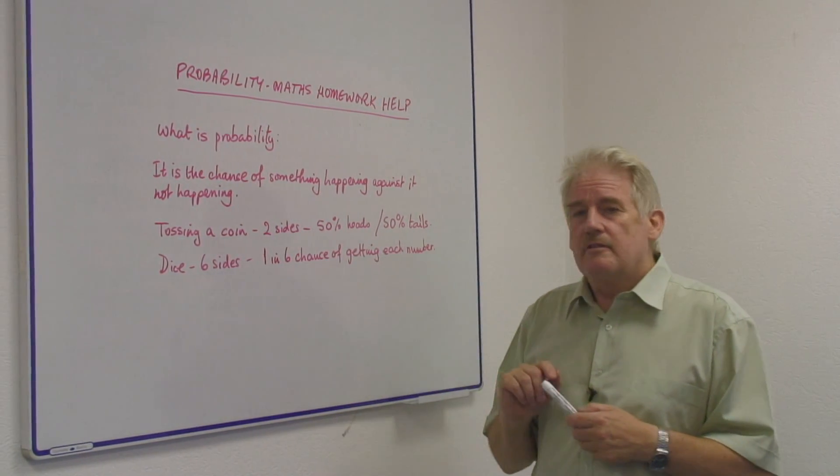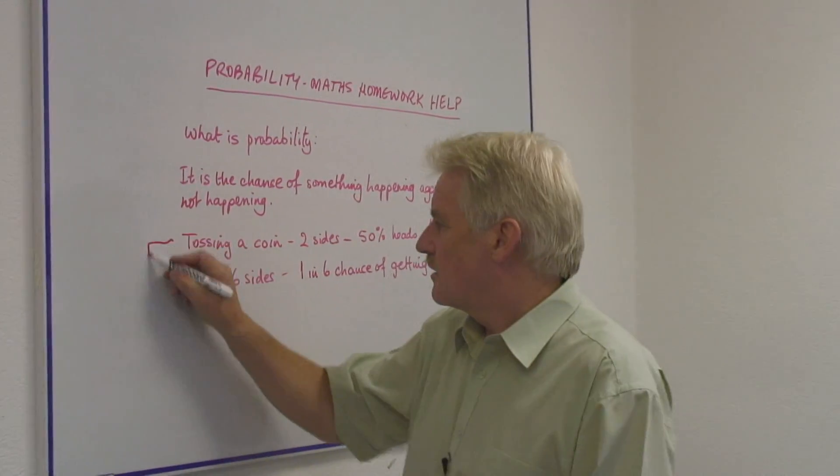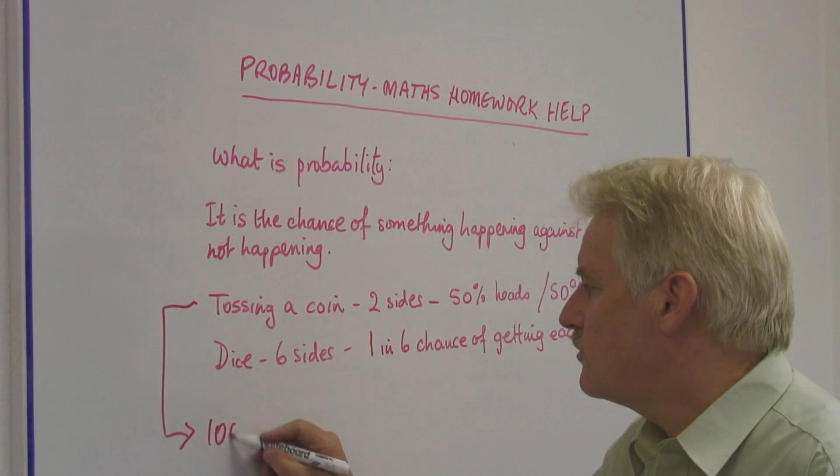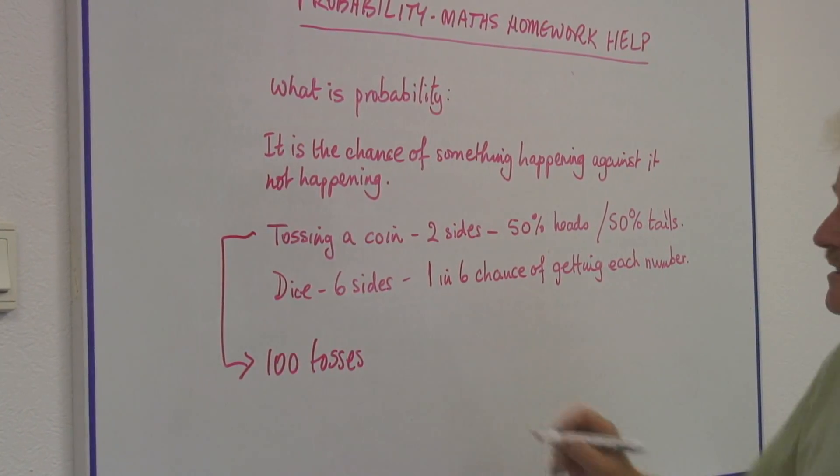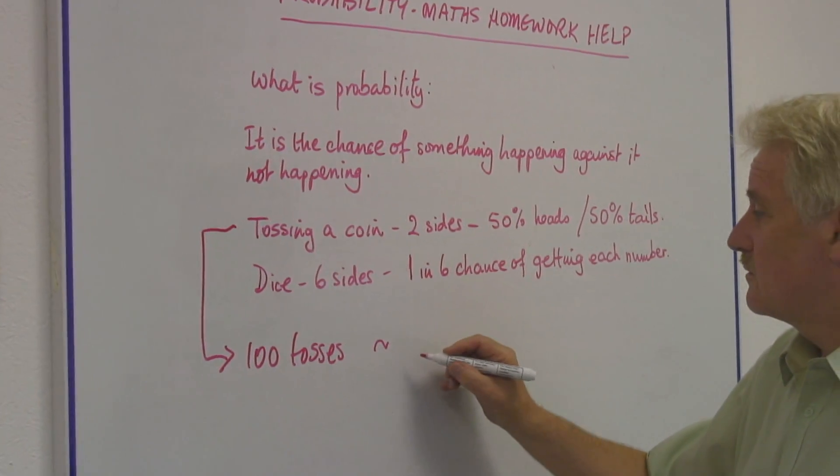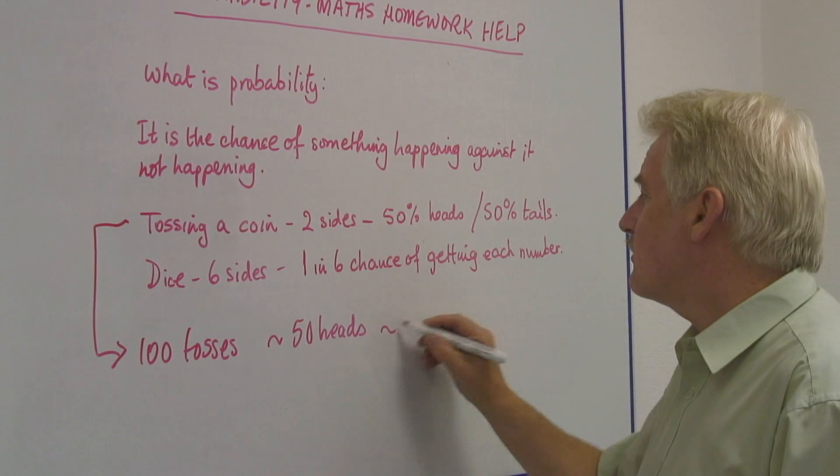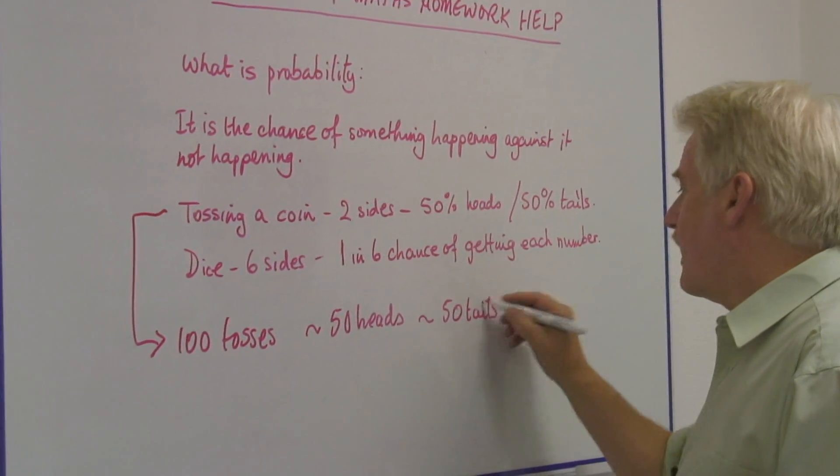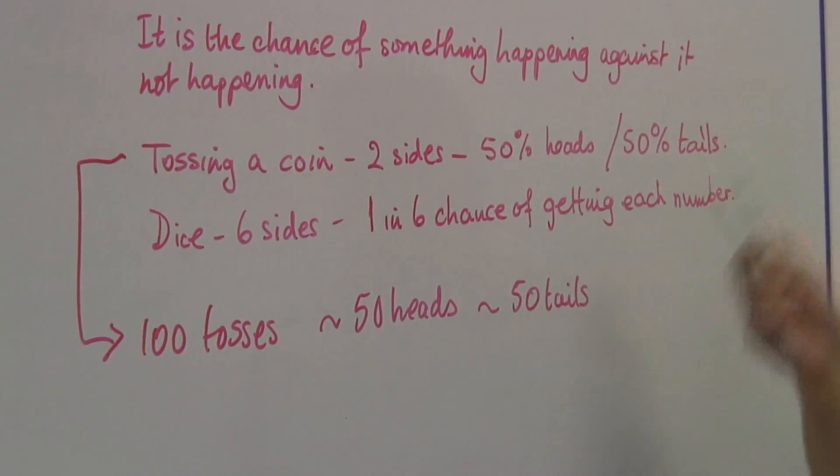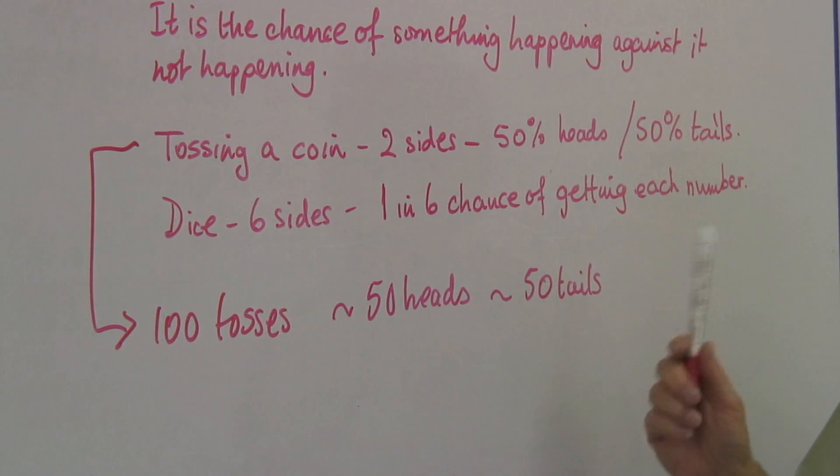But at the same time, if I toss it 100 times, in the course of 100 tosses, I should get about 50 heads and about 50 tails. That's the law of probability. But every time I toss the coin, it's still a 50-50 chance.